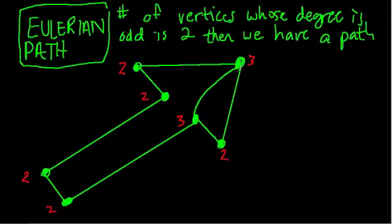So when there are exactly two vertices whose degree is odd, we have a path, and this means I can start at any vertice and draw the shape with a single line, but I will not be able to return to my starting point. It's impossible.